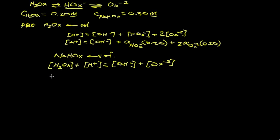Let's rewrite this in terms of alpha. So alpha H₂ oxalate times the reference analytical concentration of the reference. That's 0.30 plus the hydrogen ion is equal to the hydroxide ion plus alpha for the oxalate dianion times the analytical concentration of the reference. In this case, again, 0.3 molar.